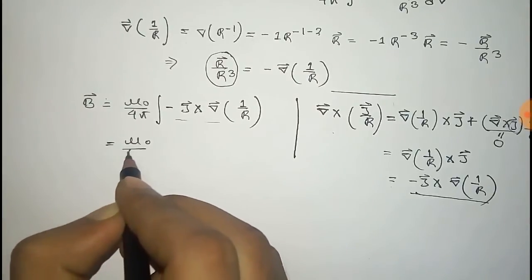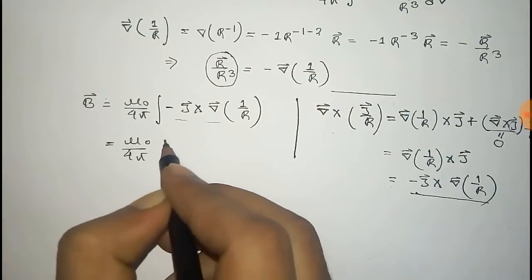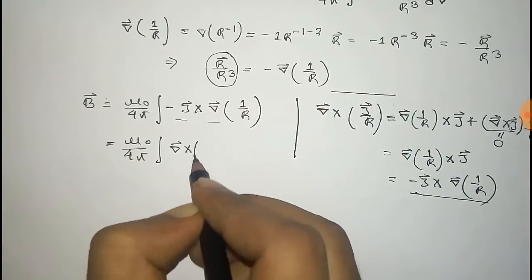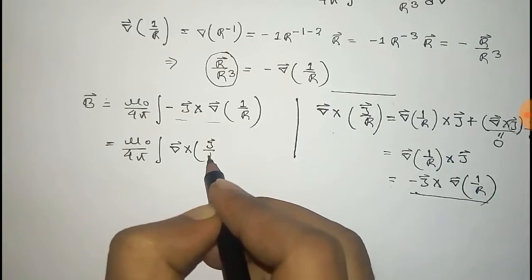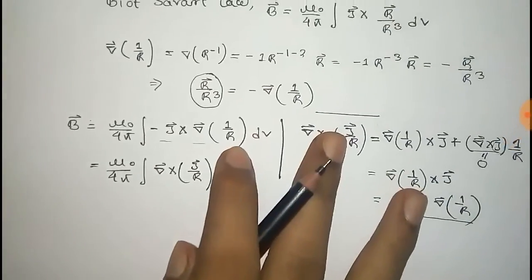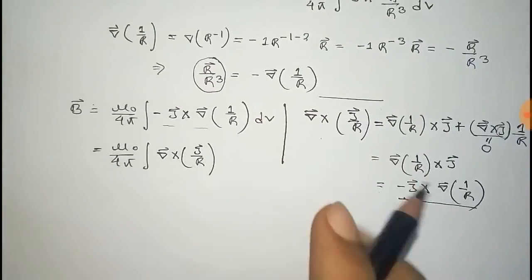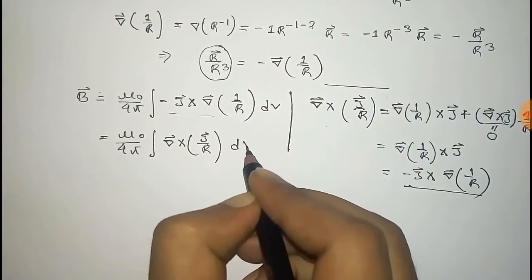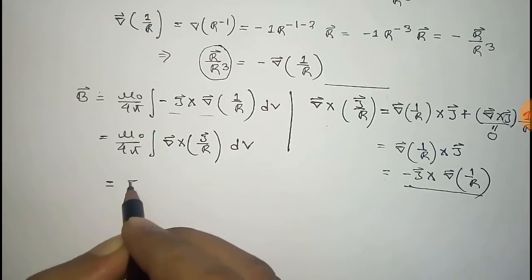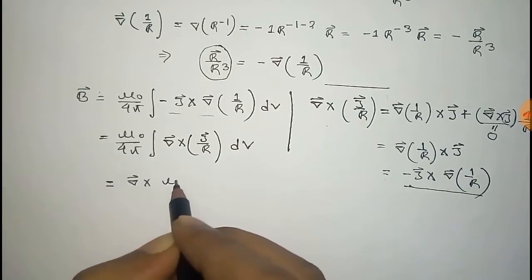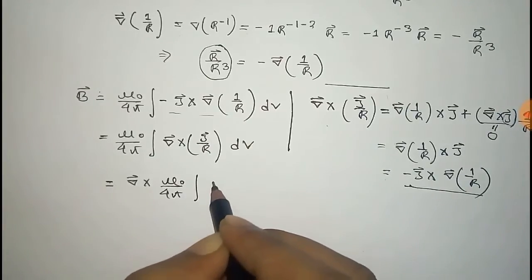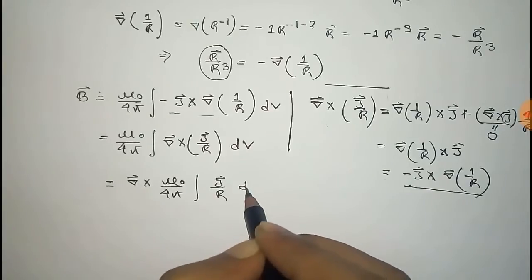This will be μ₀/4π times the integration of the curl of J/r dv, which can be written as the curl of μ₀/4π times the integration of J/r dv.